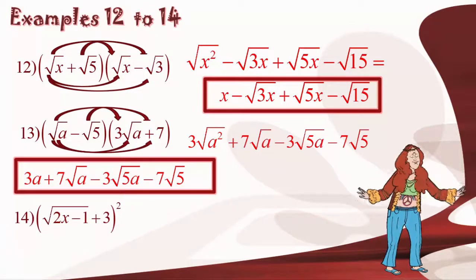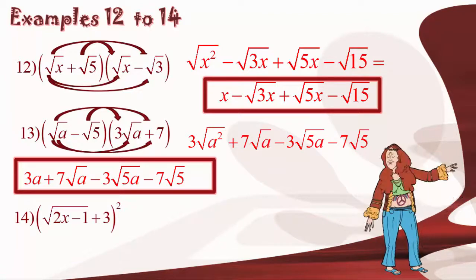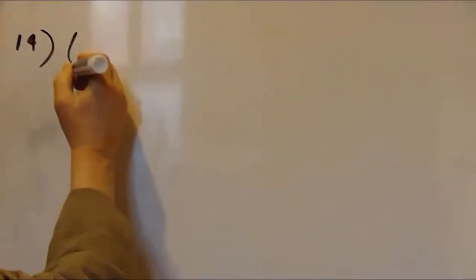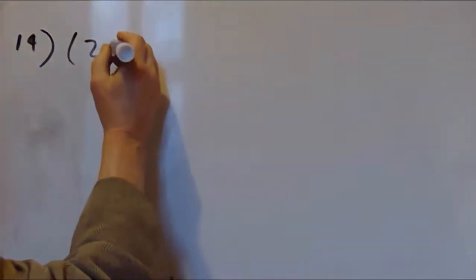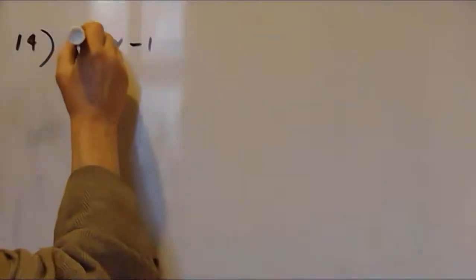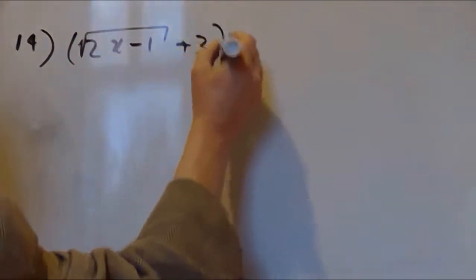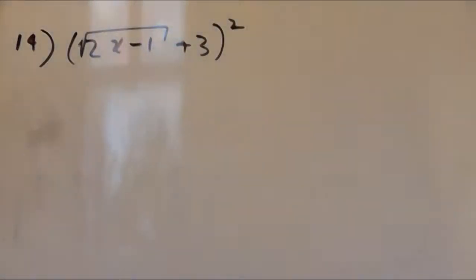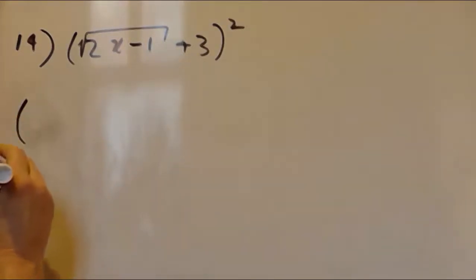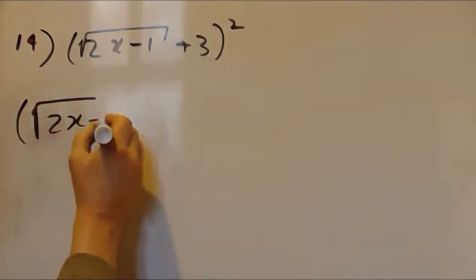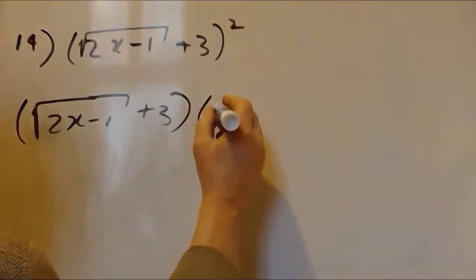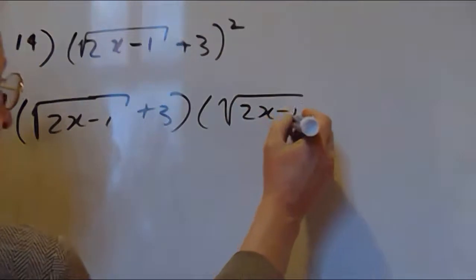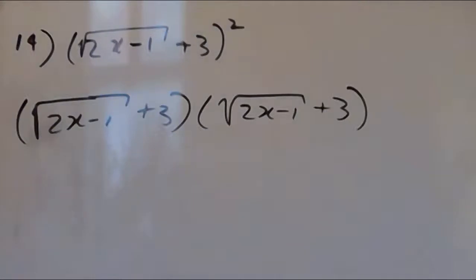In example number 14, we're asked to simplify square root of 2x minus 1 plus 3, all squared. This is a little different. Squaring means we repeat the binomial twice, so we have square root of 2x minus 1 plus 3 times square root of 2x minus 1 plus 3, and then we apply FOIL.